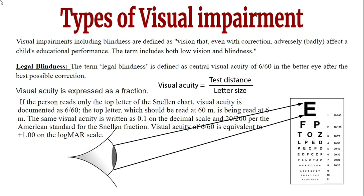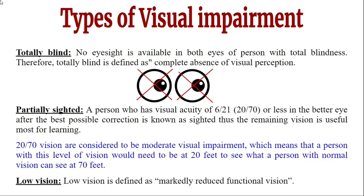Total blindness means no eyesight is available in both eyes, and is defined as complete absence of visual perception. The next type is partially sighted — a person with visual acuity of 6/21 or 20/70 or less in the better eye after best possible correction. The remaining vision is still useful for most learning. A visual acuity of 20/70 is considered moderate visual impairment, meaning a person needs to be at 20 feet to see what a person with normal vision can see at 70 feet.